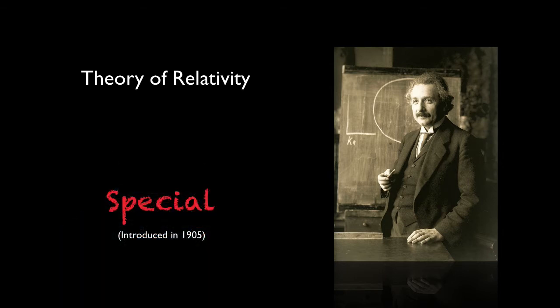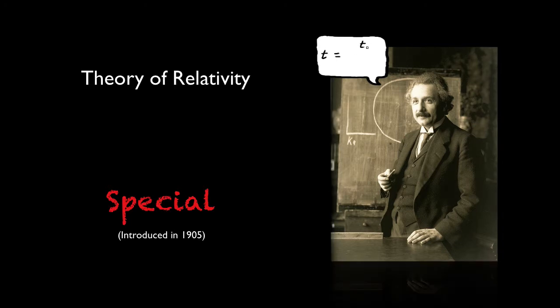Special relativity focuses only on those special cases where there's no acceleration. You can use special relativity to calculate how time passes differently for two people moving at different speeds. From special relativity, Einstein developed the equation for which he is most famous, which is E equals mc squared. As we discussed earlier, this equation tells us how energy and mass are really two forms of the same thing.